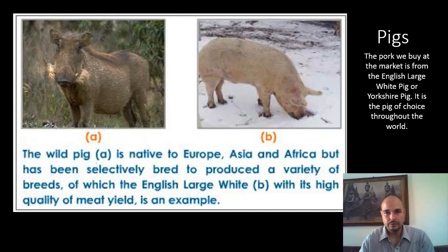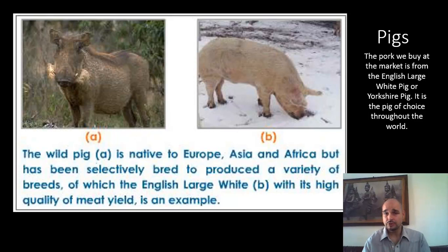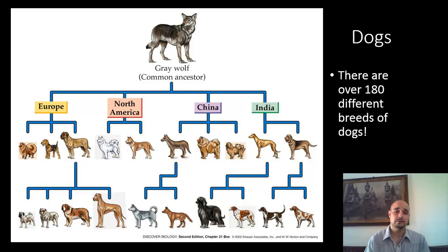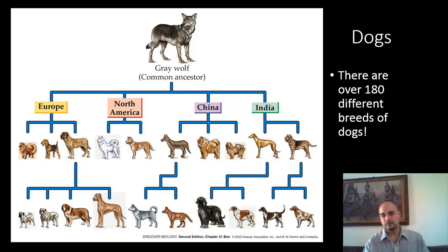This species was first recognized in the 1860s. Today, this is the pig of choice that we purchase at the markets — high muscle mass. There are over 180 different breeds of dogs, and all of these dogs were originally bred from the gray wolf. Different desirable features were selected and bred for in different continents throughout the world, and now there are over 180 different breeds of dogs.